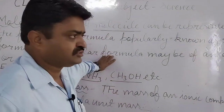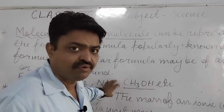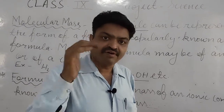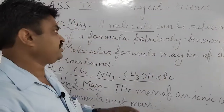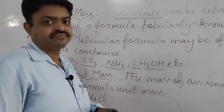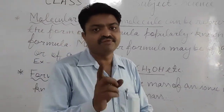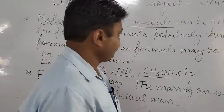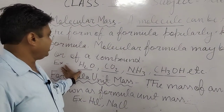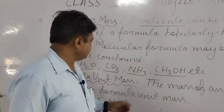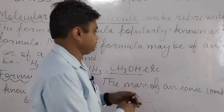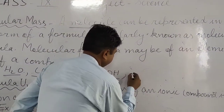So for covalent compounds, or for elements like hydrogen gas, oxygen gas, chlorine gas, or for water, we try to find out molecular mass. But for ionic compounds, we get the formula unit mass. Questions in your exam may ask you to find the molecular mass of hydrogen gas, chlorine gas, carbon dioxide, ammonia, ethanol, or methane CH4.